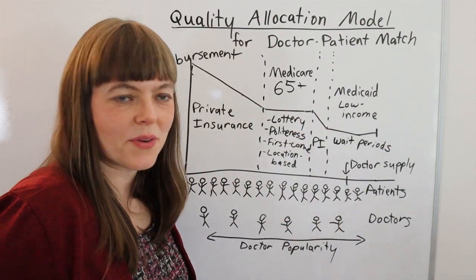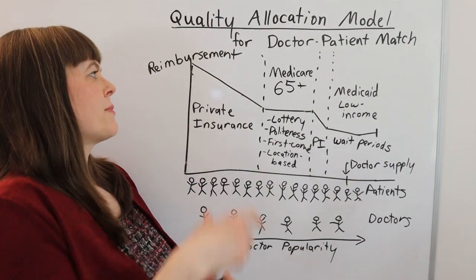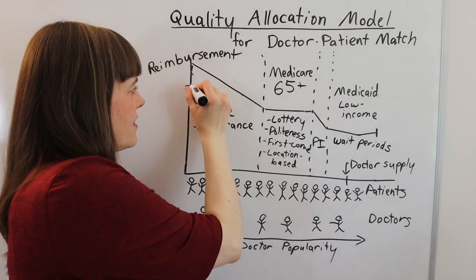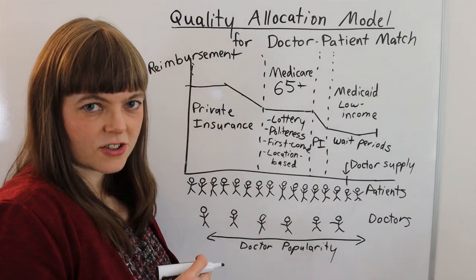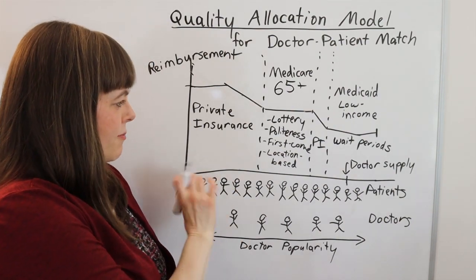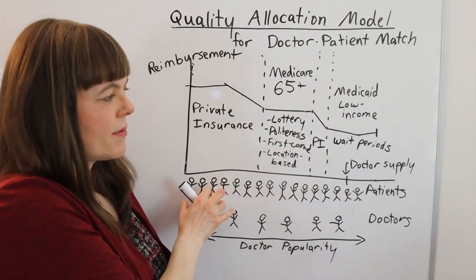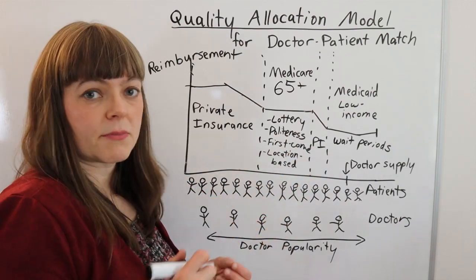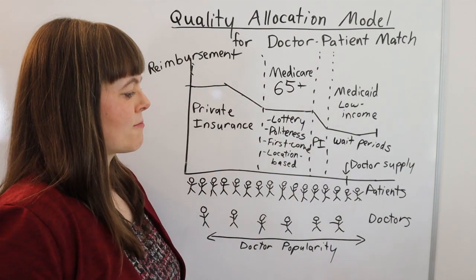You can play around with this model and do thought experiments. For example: what if the government caps reimbursement for insurance at a certain rate — how would that change the diagram? How would that affect allocation of patients to doctors, or change vertical and horizontal equity? Maybe there would be more first-come-first-serve allocation happening at the top. It would change some things, and you can explore a bunch of scenarios through this allocation mechanism.